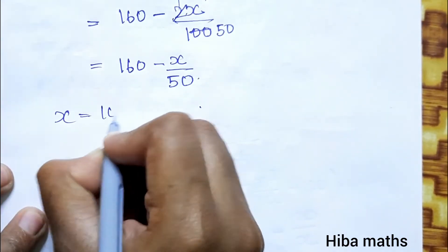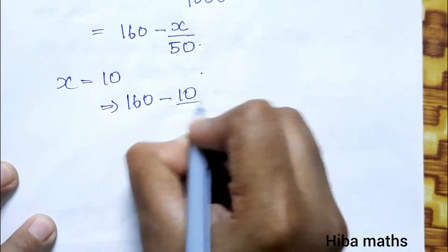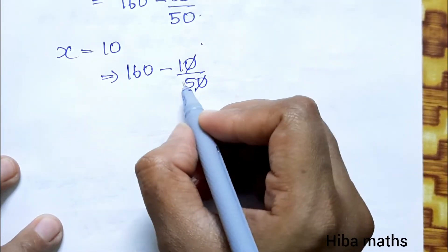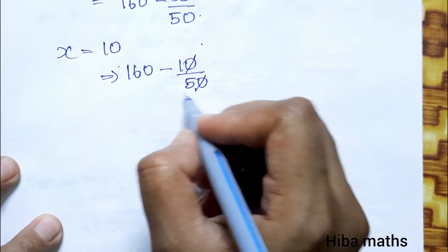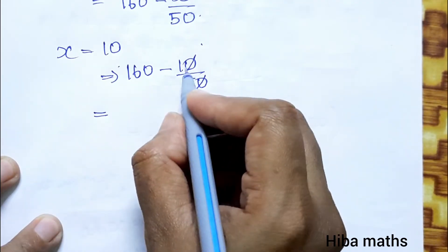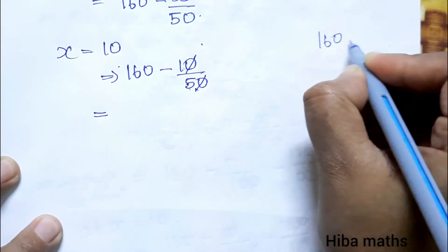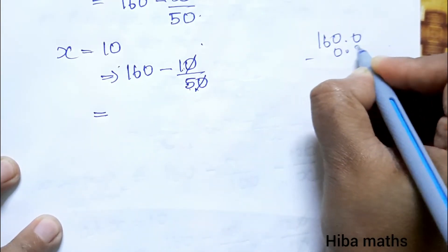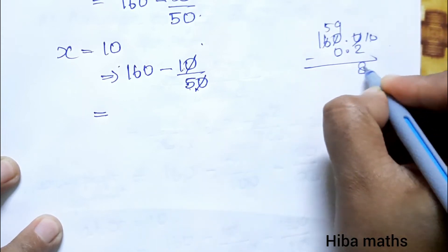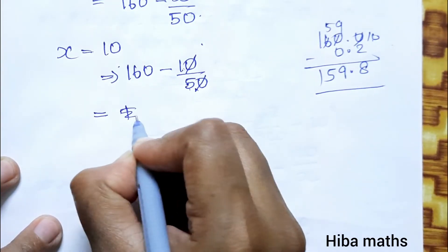At x = 10: marginal profit = 160 - 10/50 = 160 - 1/5 = 160 - 0.2 = 159.8. This is the marginal profit at x = 10.